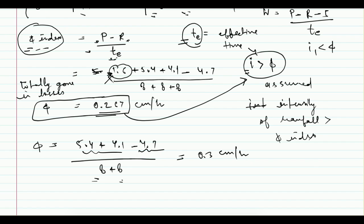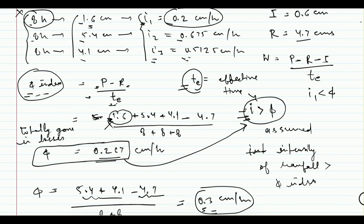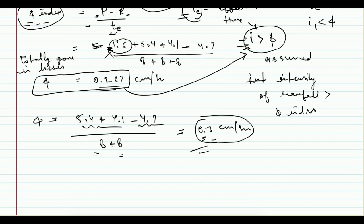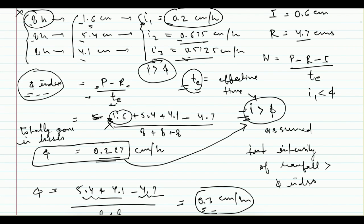We cross-check again: phi index is 0.3 cm/hr, and the remaining rainfall intensities are 0.675 and 0.5125 — both greater than 0.3. So the condition is satisfied and 0.3 cm/hr is the final phi index. This is the most common mistake to watch out for: always cross-check your phi index against rainfall intensities, because the first iteration answer is often present in the answer choices but may not be correct.